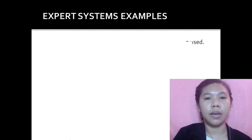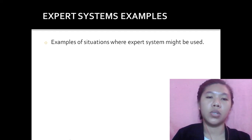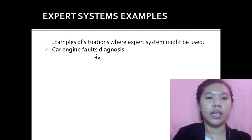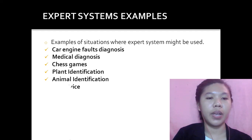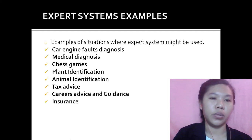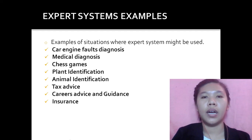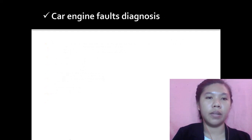Here are some Expert System examples. Examples of situations where Expert Systems might be used include: car engine fault diagnosis, medical diagnosis, chess games, plant identification, animal identification, tax advice, careers advice and guidance, and insurance. From these examples, I'll pick two to discuss to better understand what an Expert System is.